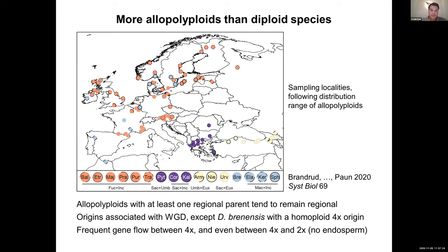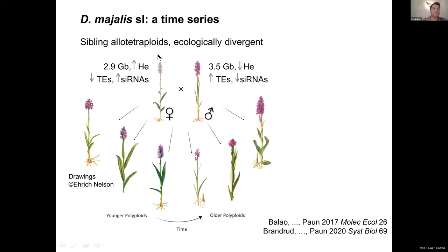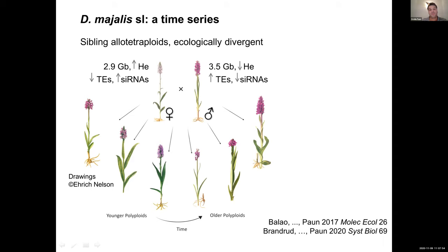I will focus on the orange group of polyploids formed by Fuchsii and Incarnata — these are sibling allopolyploids. D. Fuchsii always acts as the maternal parent and D. Incarnata always as the paternal parent. The two diploids differ in their genomes: D. Incarnata returned to Europe roughly 1.5 million years ago, and we think this was associated with a strong bottleneck, significantly decreasing its heterozygosity compared to Fuchsii but also increasing the amount of transposable elements, roughly increasing genome size by 20 percent.